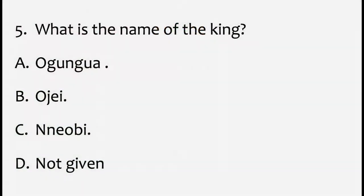Question 5 — What is the name of the king? A: Ogugua. B: Ojei. C: Nobi. D: Not given. Looking at the options given, the correct answer is A: Ogugua.